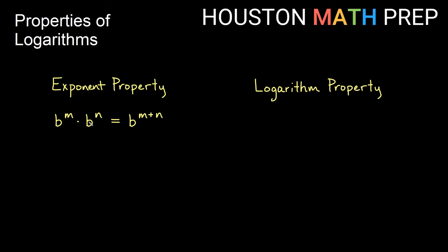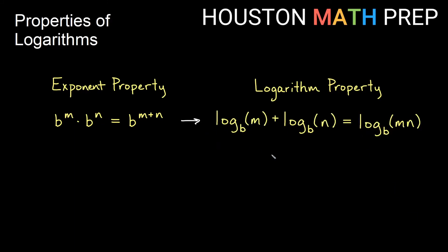When we have multiplication between exponentials, that becomes addition in the same exponential. The reverse property is true of logarithms: if we have two logarithms with the same base and we're adding them, we can put them together and addition becomes multiplication inside of a single log.